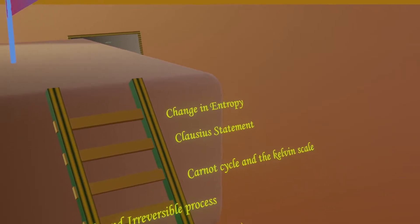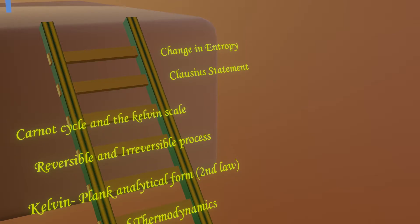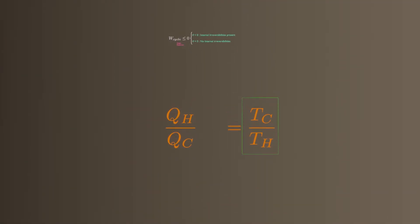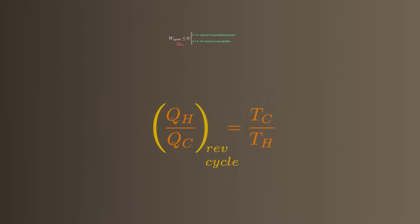Taking the next step is the Carnot cycle and Kelvin scale. Be sure to watch the Carnot cycle video. The thermal efficiency of the Carnot cycle is used to describe the Kelvin scale. Kelvin proposed that the ratio of temperatures equals the magnitude of the ratio of quantities of heat absorbed and rejected. This equation is valid for reversible processes only, where Th is the temperature of the hot reservoir and Tc is the temperature of the cold reservoir. This equation is proved after finishing the Carnot cycle lecture.